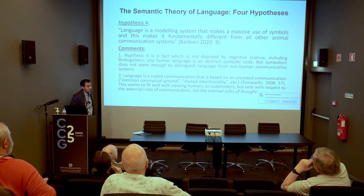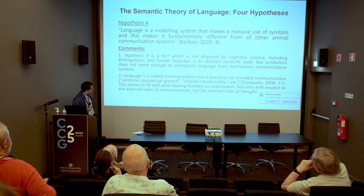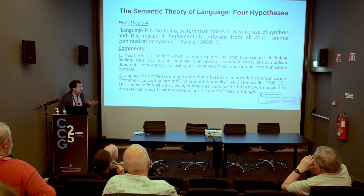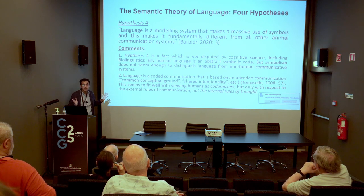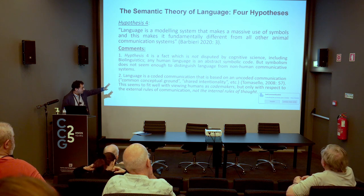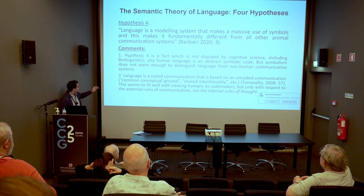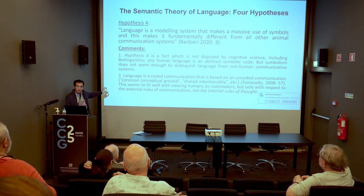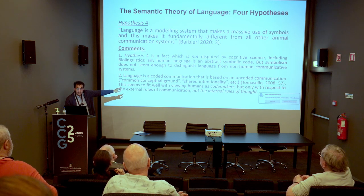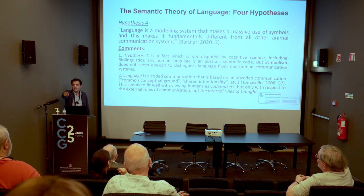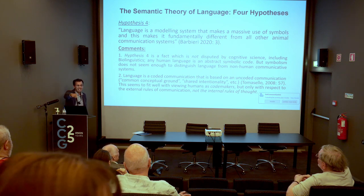Finally, hypothesis four: language is a modeling system that makes massive use of symbols, making it fundamentally different from all other animal communication systems. This hypothesis is actually a fact not disputed by cognitive science, including biolinguistics — we look at language as a modeling system. Nobody disputes the symbolism of language. However, symbolism does not seem enough to distinguish language from non-human communicative systems.